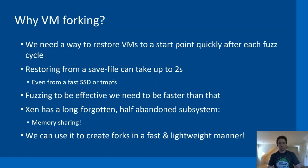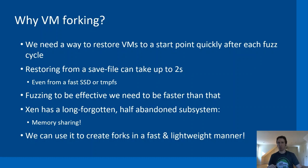For VM forking, we wanted a way to restore VMs to a starting point quickly after each fuzzing iteration. First we looked at restoring the entire system from a save file, but this can be quite slow — up to two seconds even from a fast SSD or tmpfs, which is not ideal. Xen already had a memory sharing subsystem where VMs can share underlying memory and only allocate new memory when the footprint diverges, so we use this to create forks in a fast and lightweight manner.